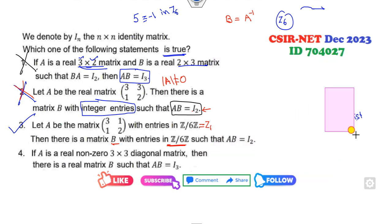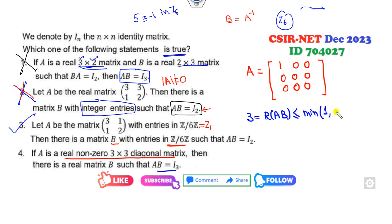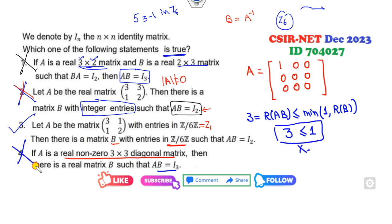Since this is Part B with only one correct option, we can discard the fourth option directly. But let me verify: A is a real non-zero diagonal matrix. Then rank of AB, if we apply the rule, is at most minimum of rank of A and rank of B. What is rank of A for a 1×1 or diagonal case? It is 1. Whatever the rank of B, the answer is always less than or equal to 1, so it cannot equal 3. This option is cancelled.